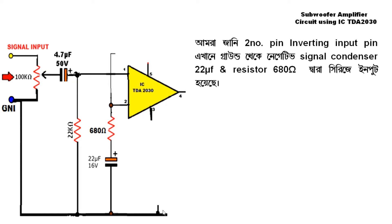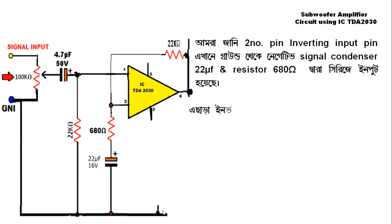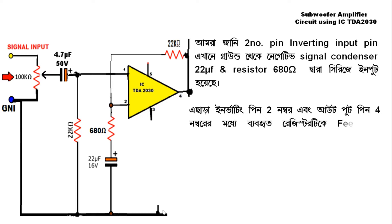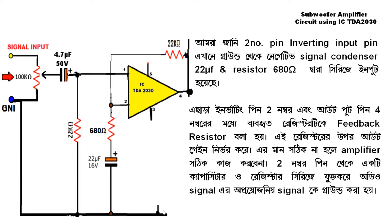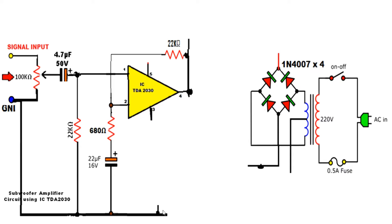This one is about 20K ohms and should be called the feedback resistor. The output uses 2 number pins to signal feedback on the output gain. In this circuit, we have the power of the IC.